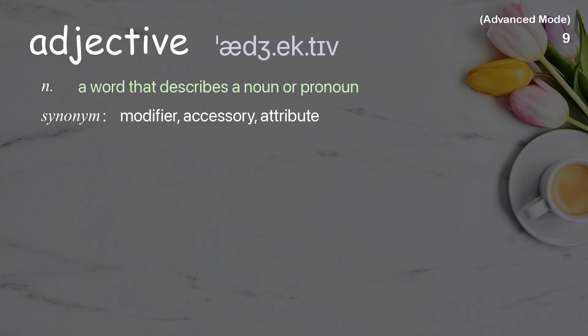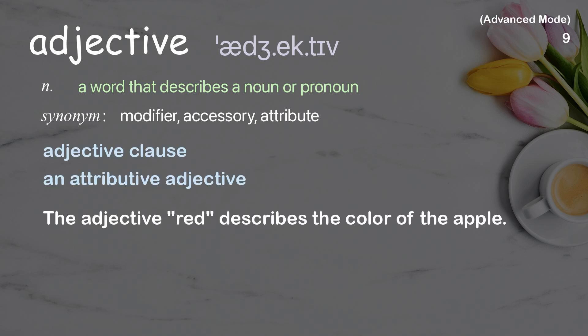Adjective: a word that describes a noun or pronoun. Examples: adjective clause, an attributive adjective. The adjective 'red' describes the color of the apple.